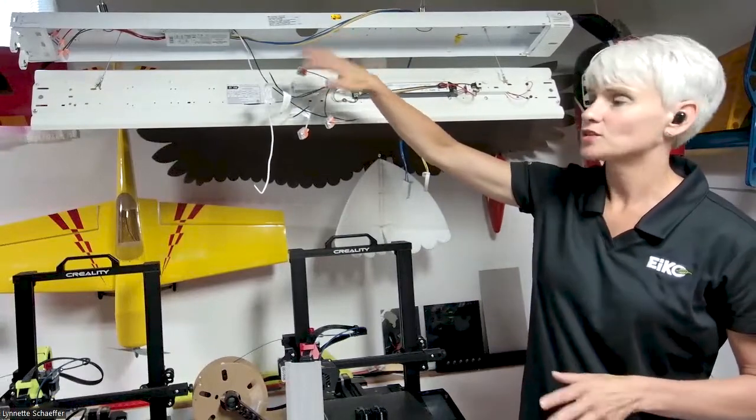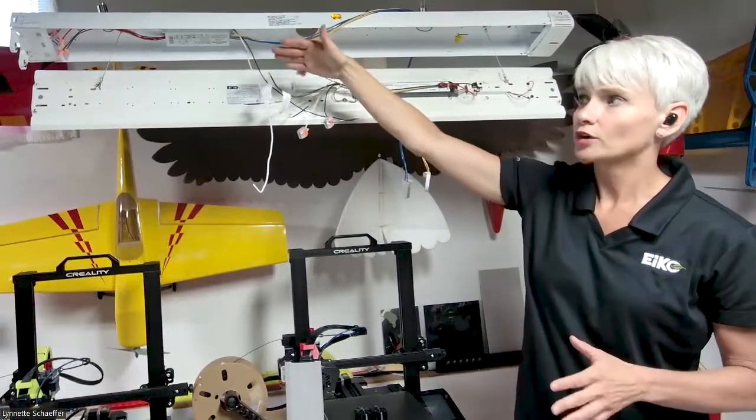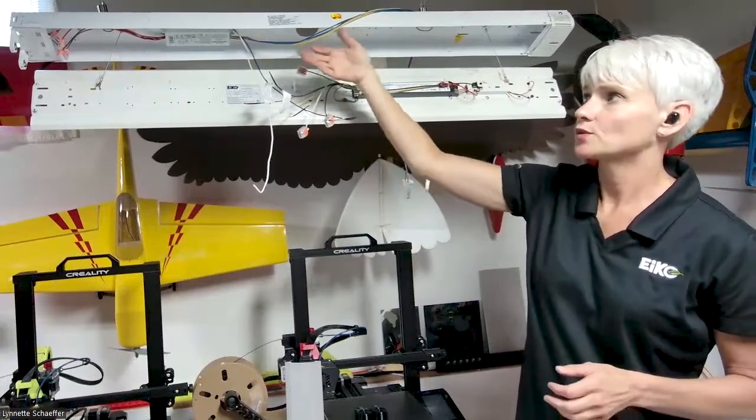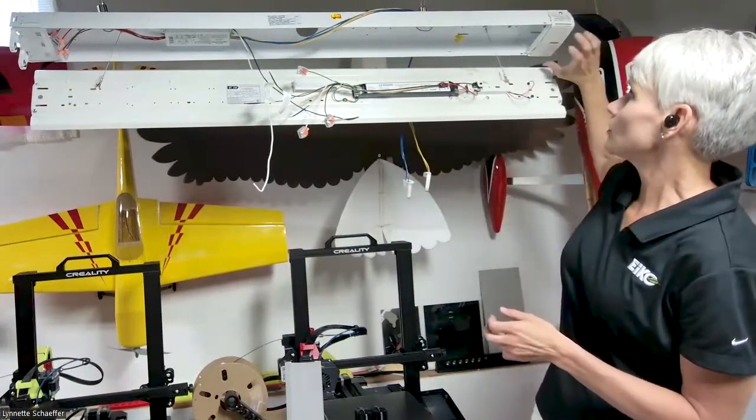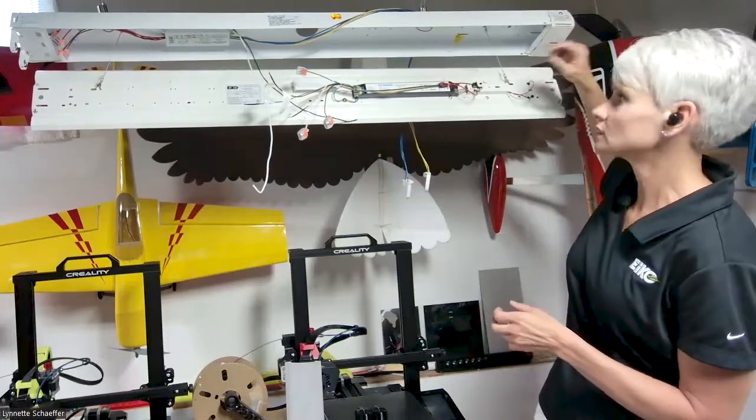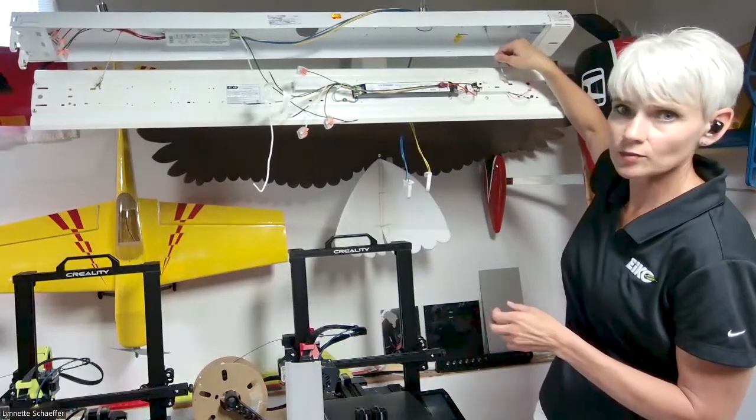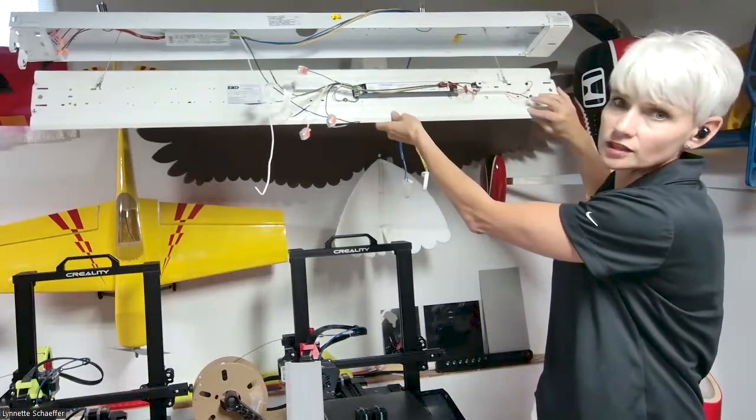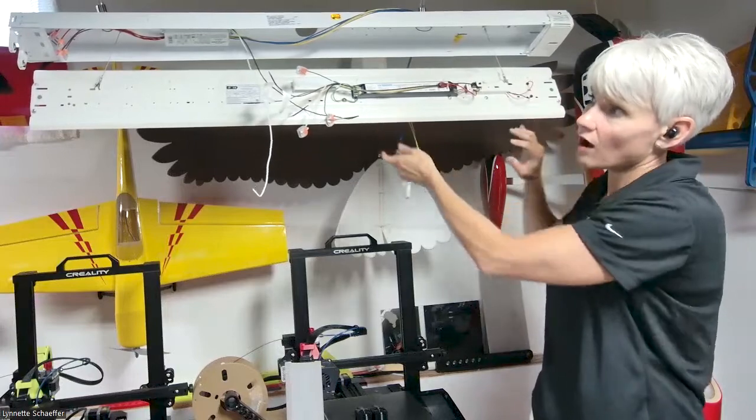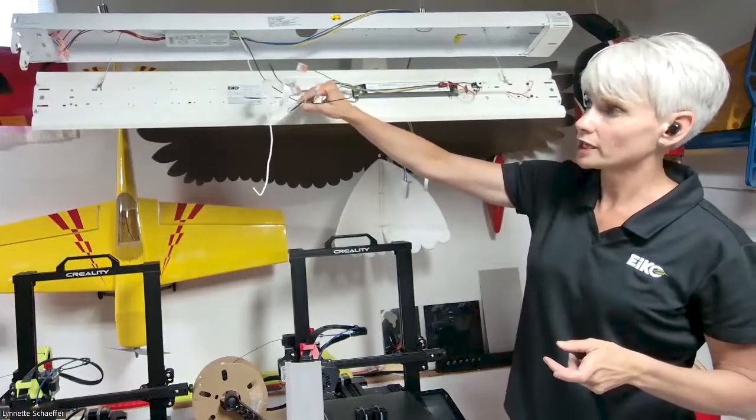First step is you want to shut your power off, disconnect your power, take out the tombstones, take out and remove the ballast. At that point you would then connect your brackets that we talked about. You can use your safety cable here, attach it to the existing fixture and then clip it on to the new retrofit. Also at that point you would make your electrical connections.